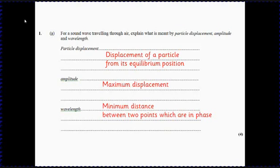And the wavelength is the minimum distance between two points which are in phase, or you could write two identical points on the wave. It's the minimum distance because obviously you might have points which are two wavelengths or three wavelengths apart. So the minimum distance is the wavelength.